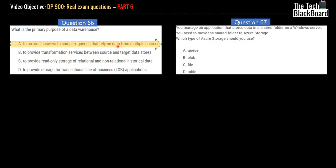Let's look at our question number 67. This one says that you manage an application that stores data in a shared folder on a Windows server. You need to move the shared folder to Azure Storage. Which type of Azure Storage should you use? Is it Queue, Blob, File, or Table? The important keywords here that you should note is shared folder. So whenever you use shared folders, you're always left with one option in Azure Storage, and that one is File Storage.